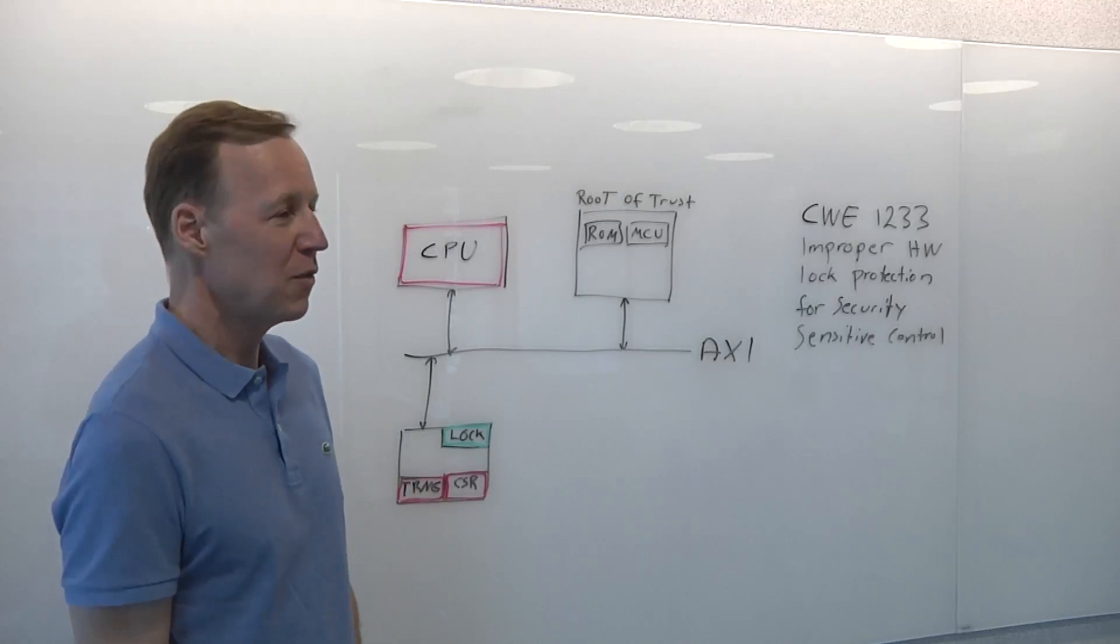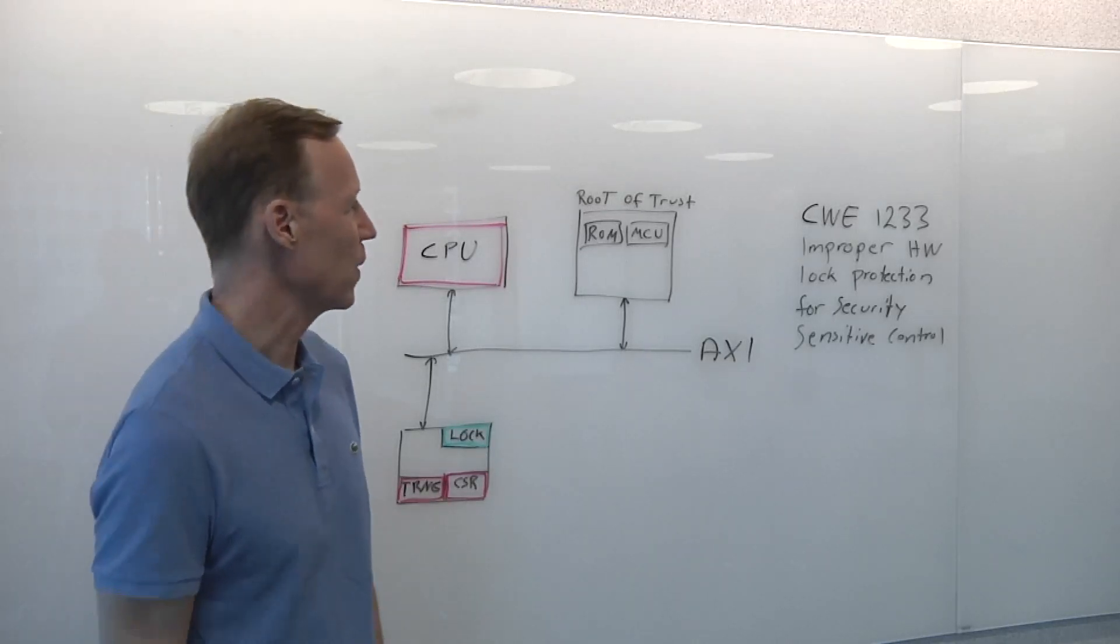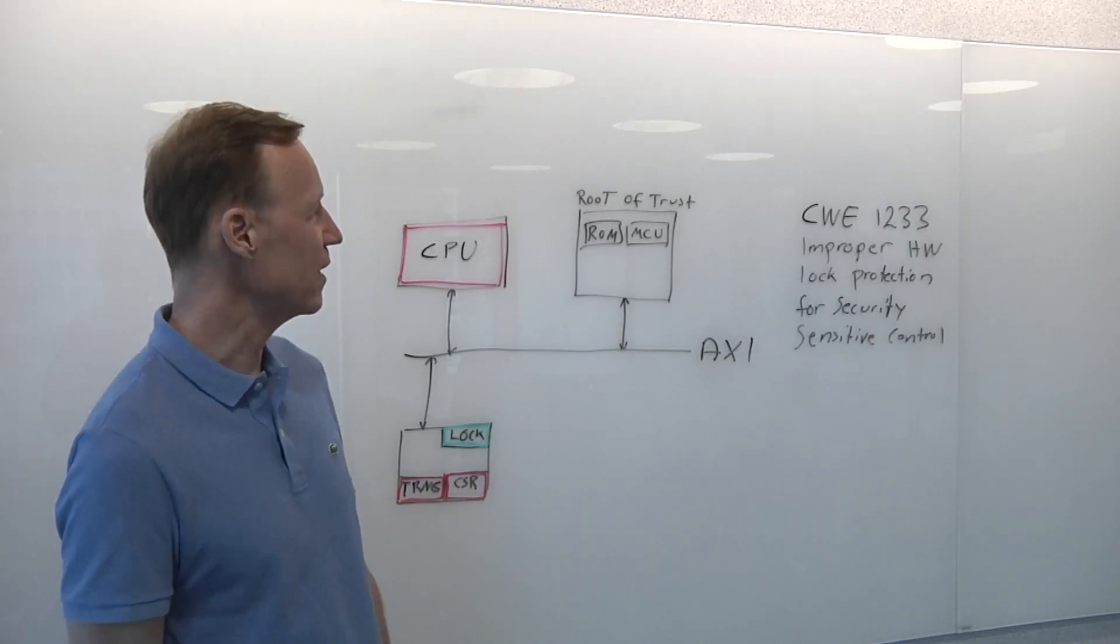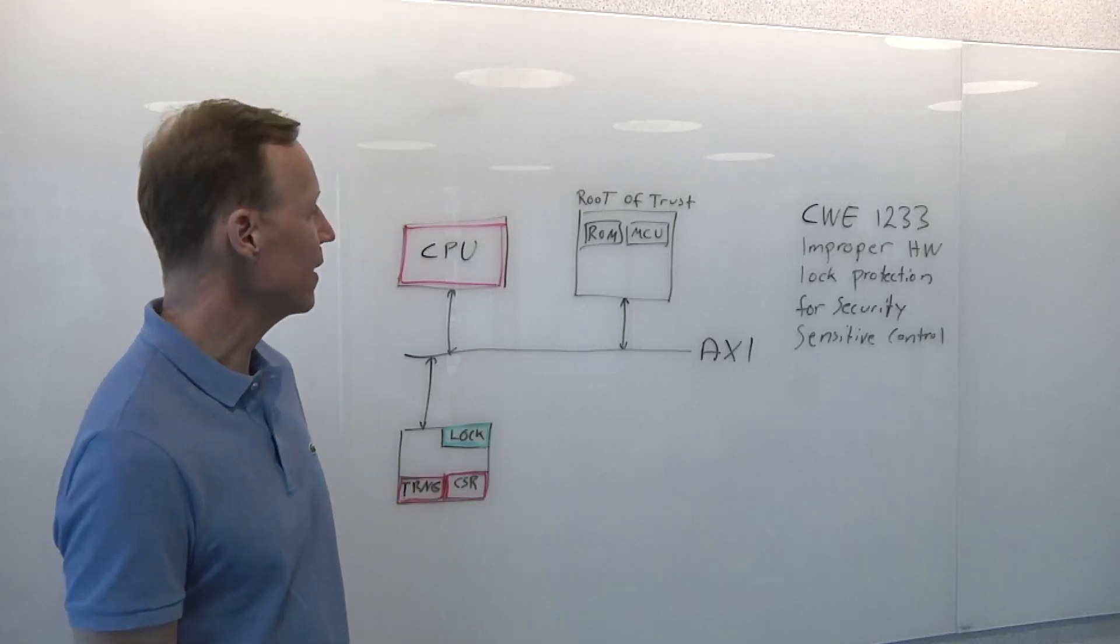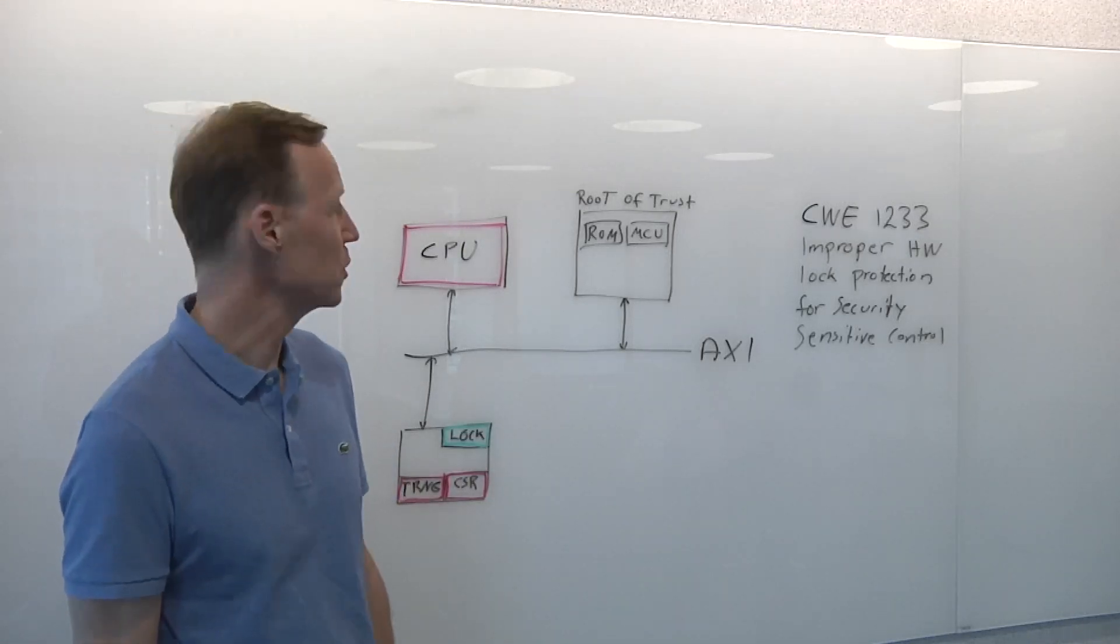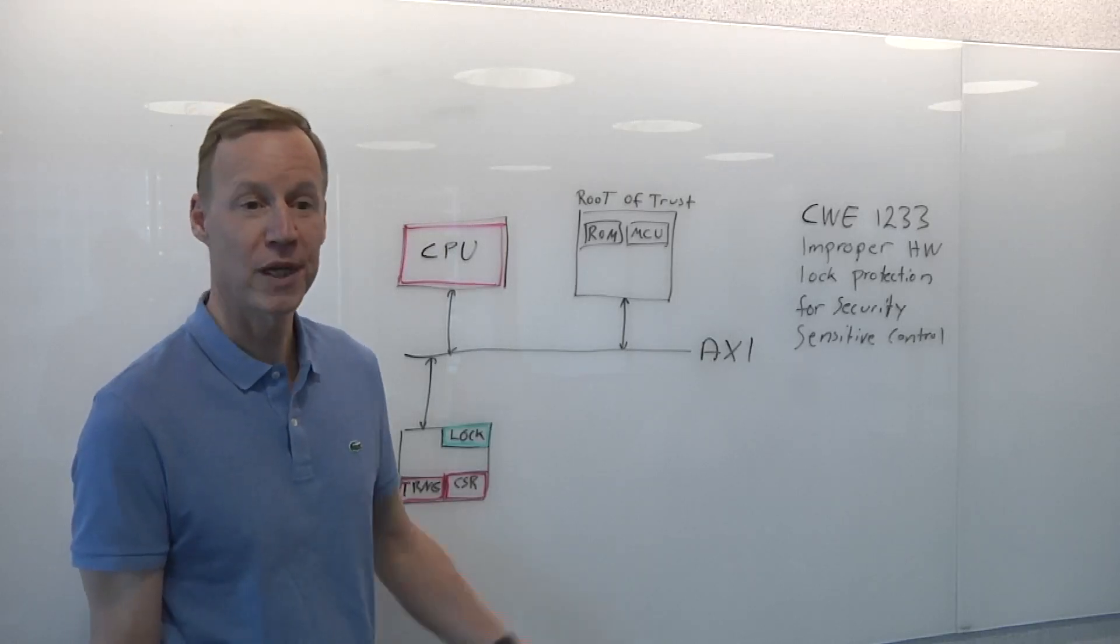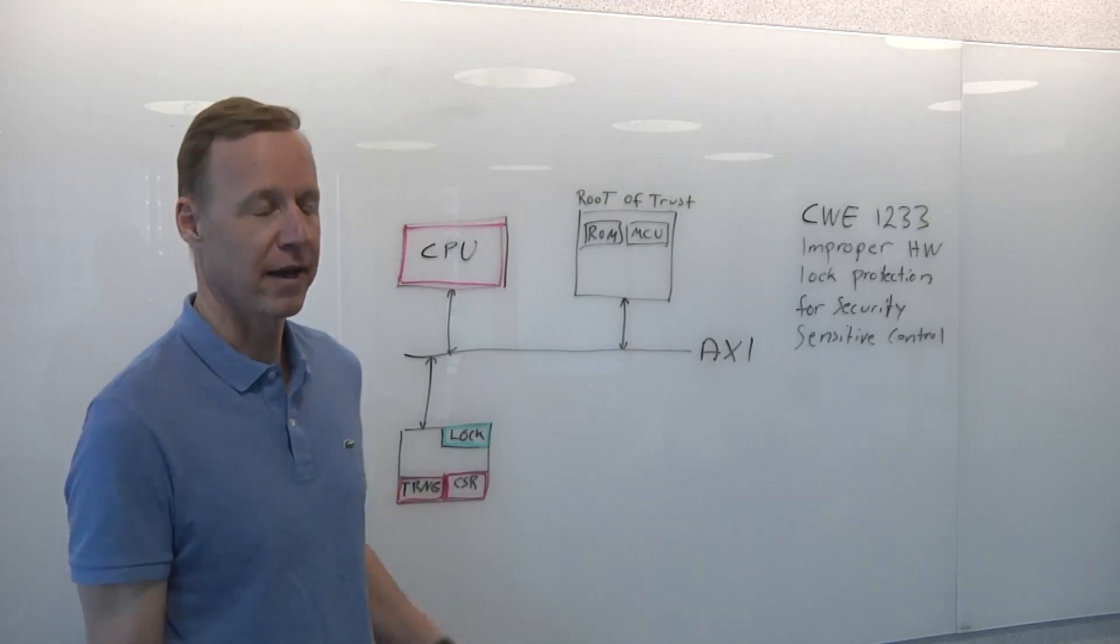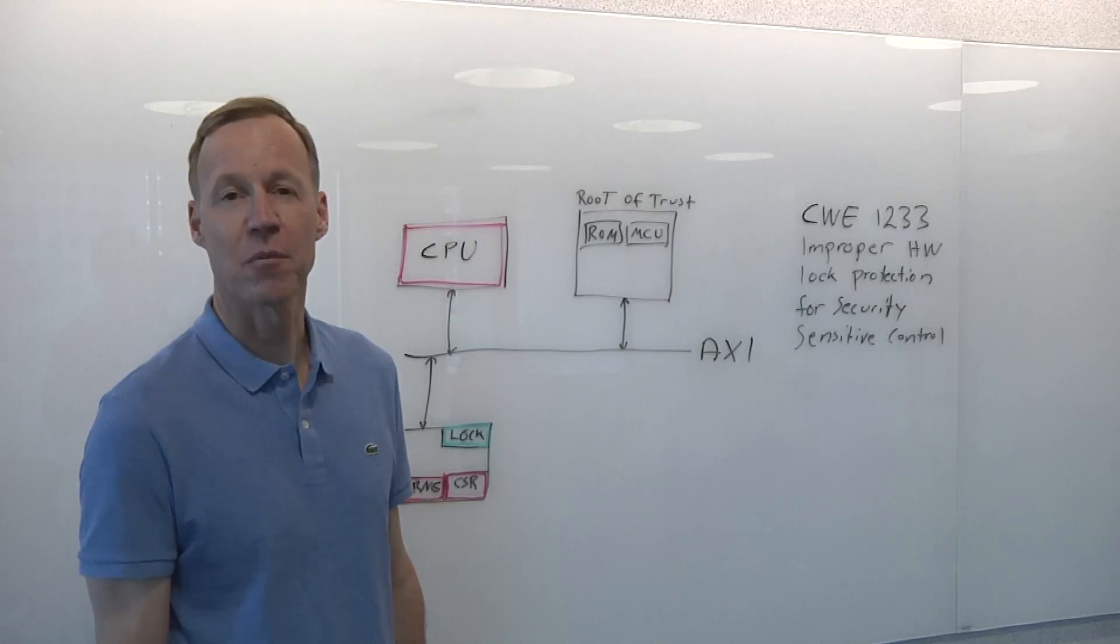Anders, what are we looking at here? We're going to be looking at a specific hardware weakness called CWE 1233. And it says, Improper Hardware Lock Protection for Security Sensitive Control. So we're going to see what does that mean and look at a specific example of that.